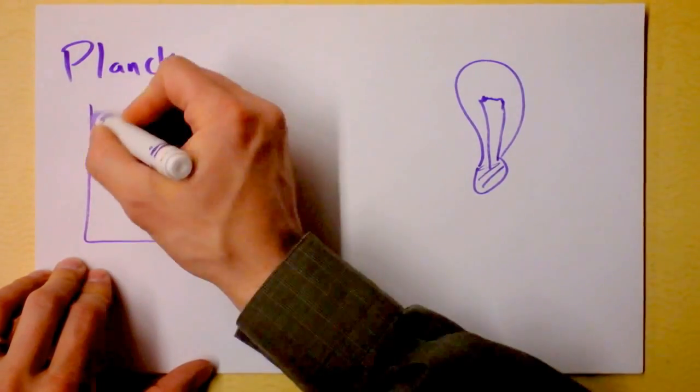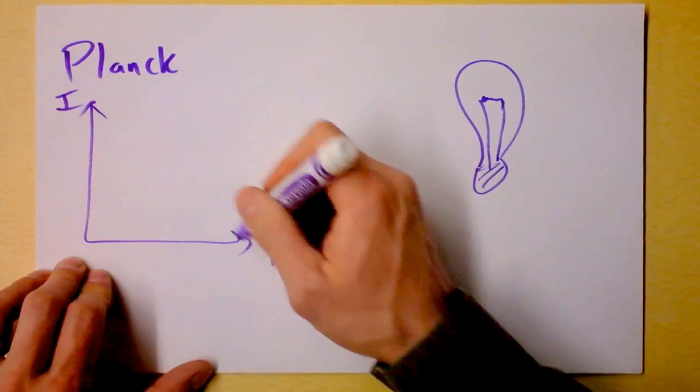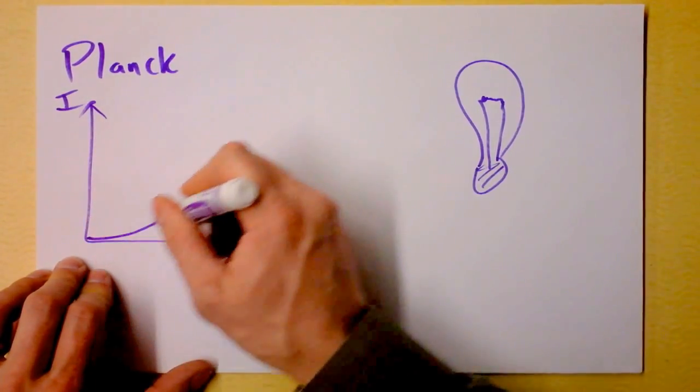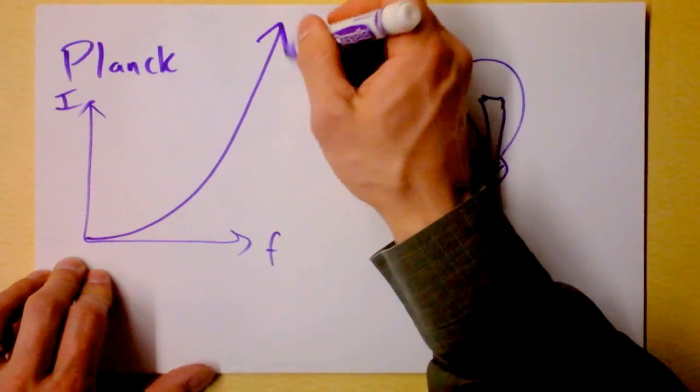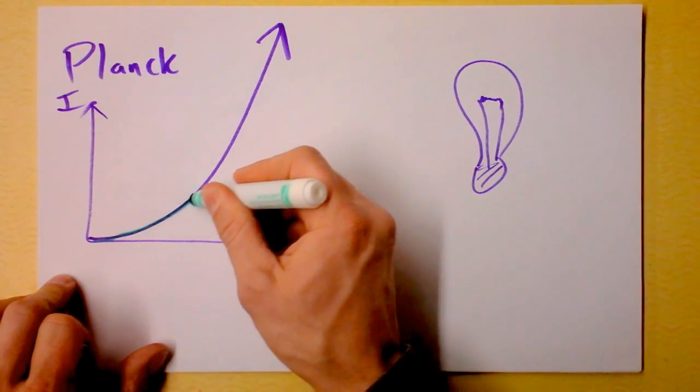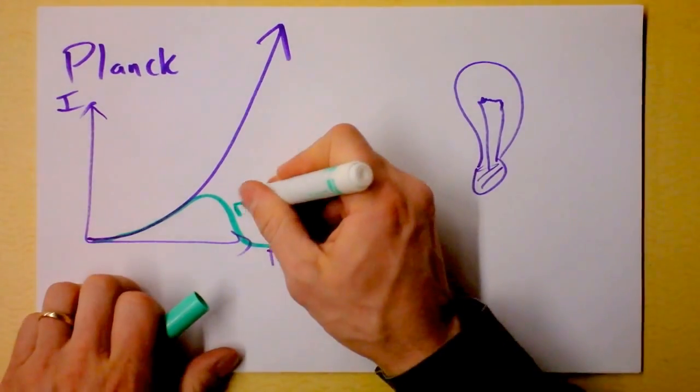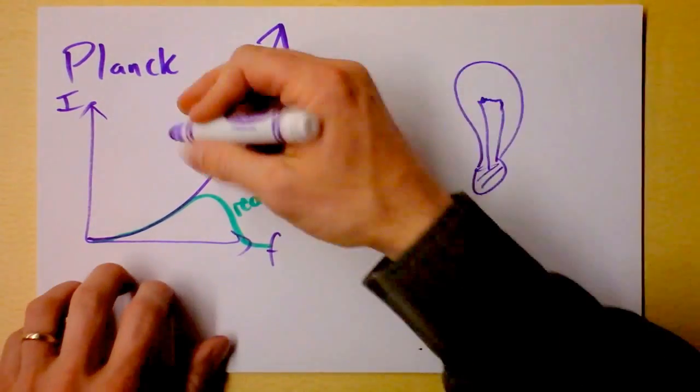And remember, our issue is that intensity as a function of frequency is supposed to go like this by the current theory of the time, but it actually goes like this, and see from green it's like, and then it's pretty much over right there. So this is real, and this is classical.